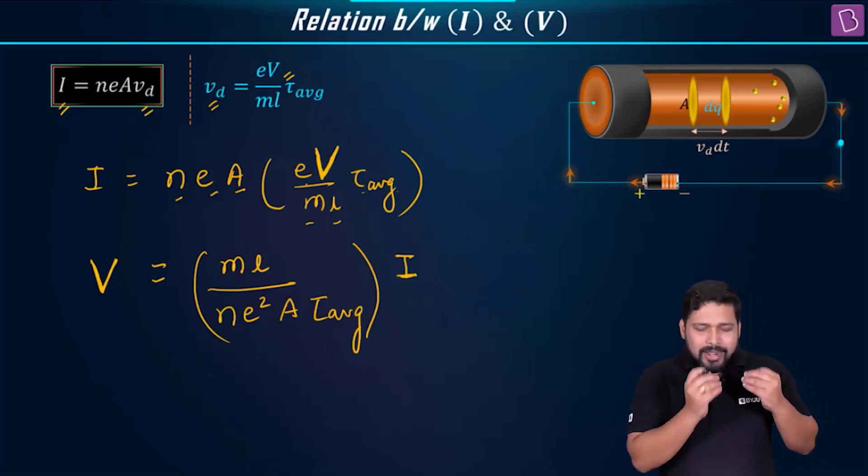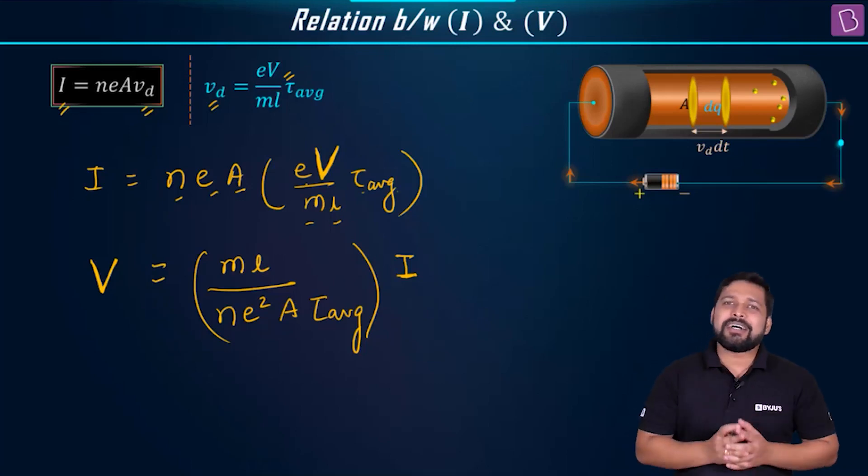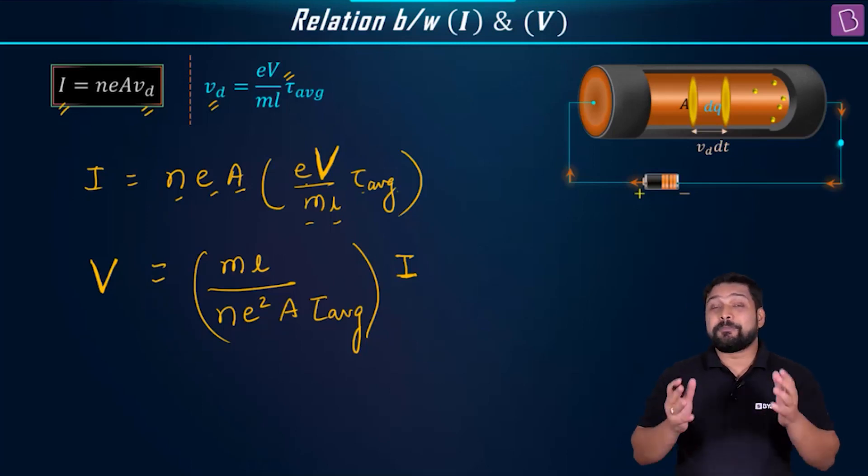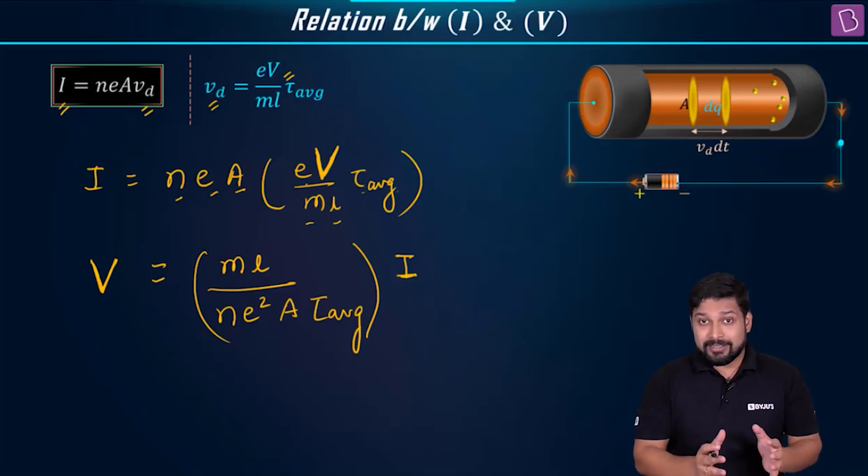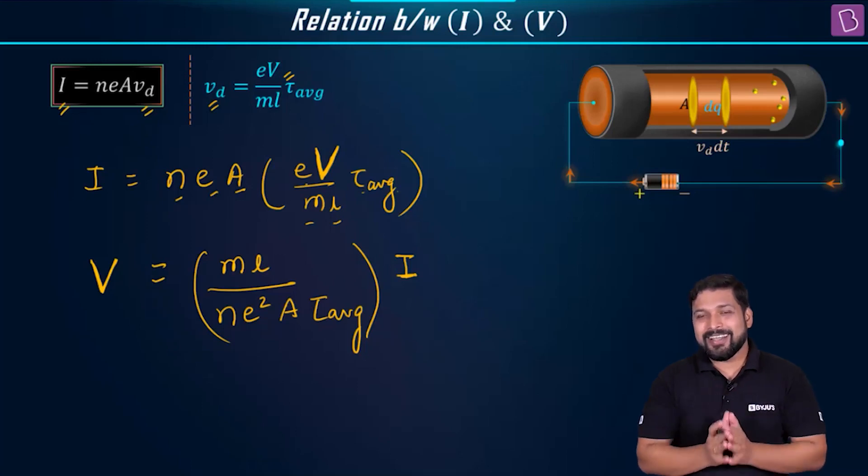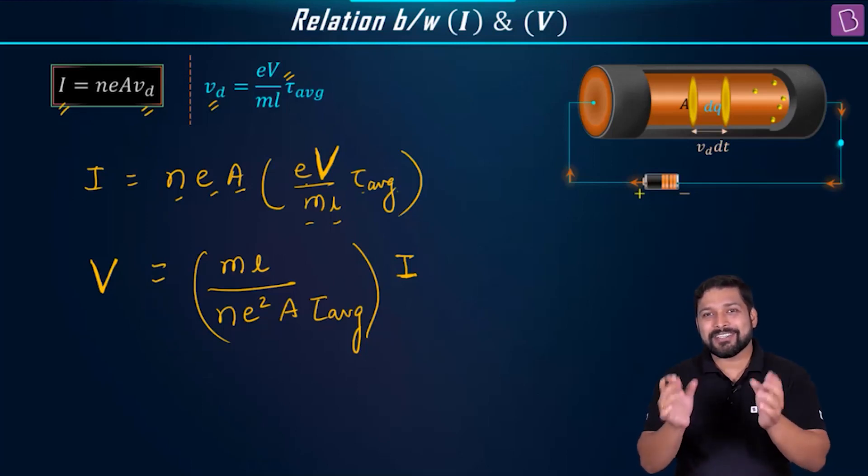From the core understanding, from the classical understanding of what happens inside a conductor, you are able to make this breakthrough where you get a result. A result that relates to the potential difference across the two ends of the conductor and the amount of current that is flowing through it.